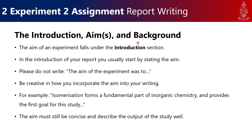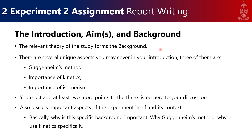Now, some specific points to discuss in the background. The background should include relevant theory needed to understand the results and discussion. Good topics to cover include Guggenheim's method, the importance of kinetics, the importance of isomerism, and what these things actually are — for example, what is kinetics, what is isomerism, and briefly discuss what cis and trans octahedral complexes are and how you can identify them. Add about two more points of your own beyond these required ones.